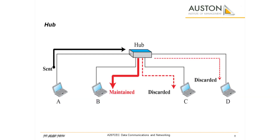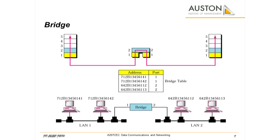A hub is a device that operates only in the physical layer. Signals that carry information within a network can travel a fixed distance before attenuation endangers the integrity of the data. A repeater receives a signal and, before it becomes too weak or corrupted, regenerates and retimes the original bit pattern. A bridge divides a large network into smaller segments, isolating and controlling link problems such as congestion. A bridge regenerates the signal, checks the physical address, and forwards only to the specified segment.